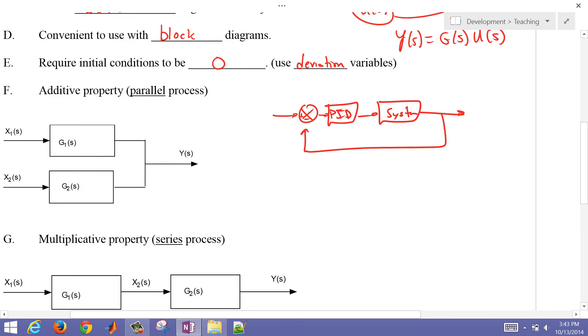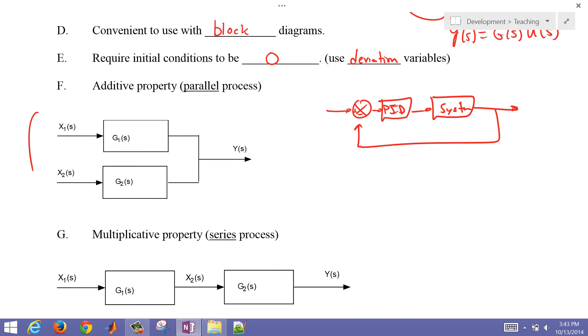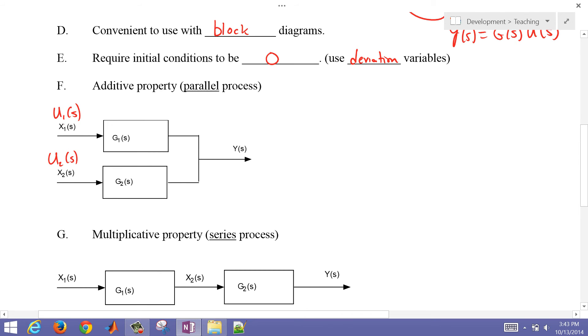So let's go on down to our additive property. This is for parallel processes. Where we have two inputs, u1 of s and u2 of s. Let's say we had y of s. So y of s is going to be, in this case, for the additive property, that's just going to equal g1 of s times u1 of s plus g2 of s times u2 of s.